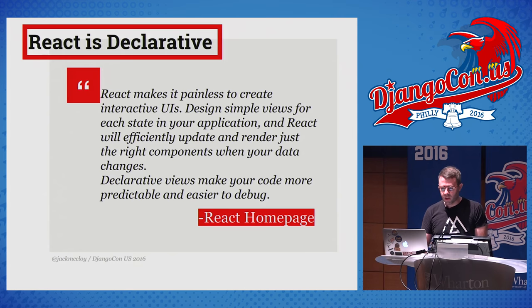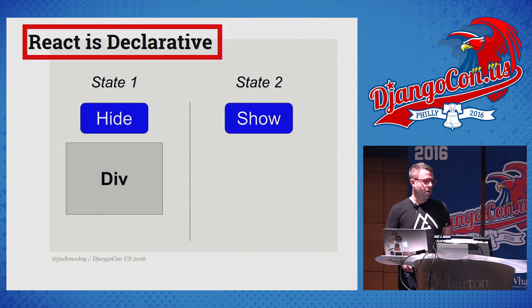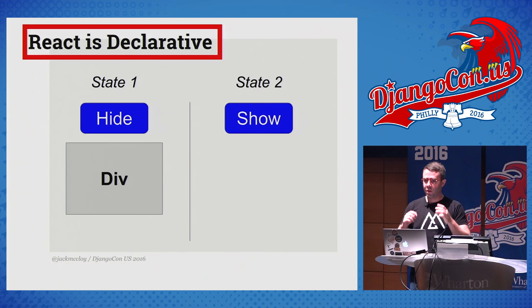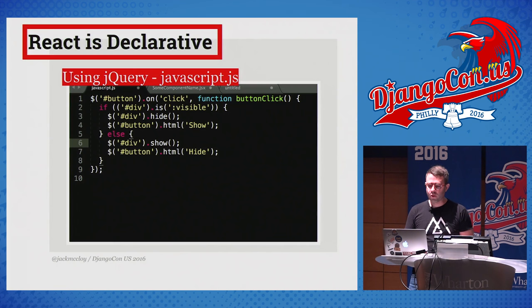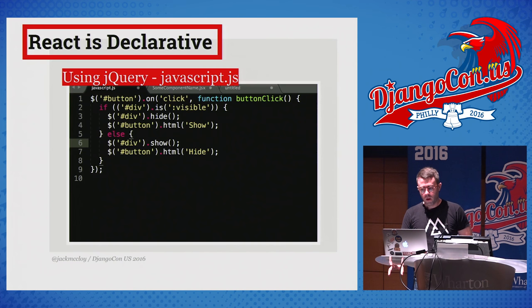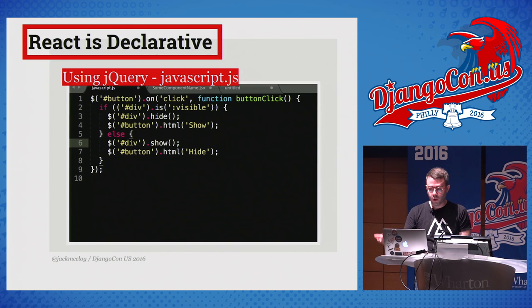How a declarative component compares with doing things the imperative way with jQuery: say you've got a simple page with a button and a div, with two states — state one, the button says 'hide' and the div is visible; state two, the button says 'show' and the div is hidden. In jQuery, you'd bind a click event to the button, that fires a function that checks what state the div is in, interprets from that whether the div should still be showing, and either shows or hides it. The state is interpreted from your DOM — I know this is really bad jQuery, by the way.